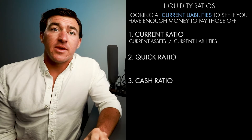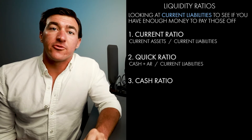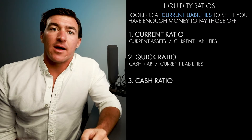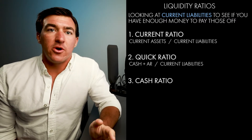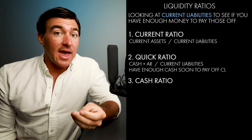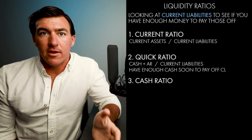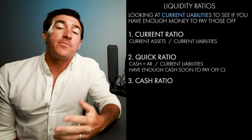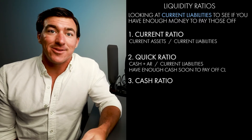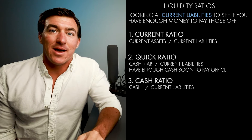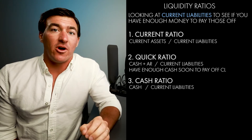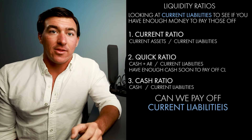The quick ratio is your cash plus your accounts receivables — which you would expect to get quick cash from — divided by current liabilities. That shows you whether you'll have enough cash soon, because you expect to collect those accounts receivables, to pay your current liabilities. The cash ratio is exactly what it sounds like: cash divided by current liabilities. All three ratios are focused on whether you can pay off your current liabilities.